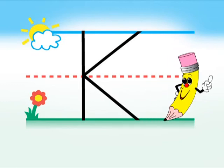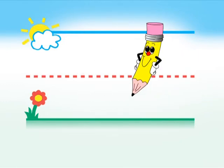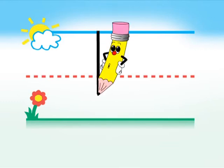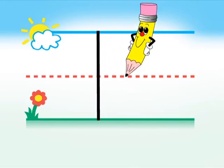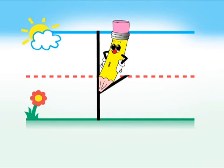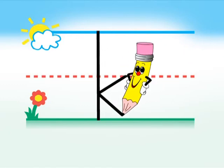Lowercase k is almost the same. Watch closely. Start at the sky and pull down to the ground. Go to the fence and slant down. Go to the center of the slanted line and slant down to the ground.